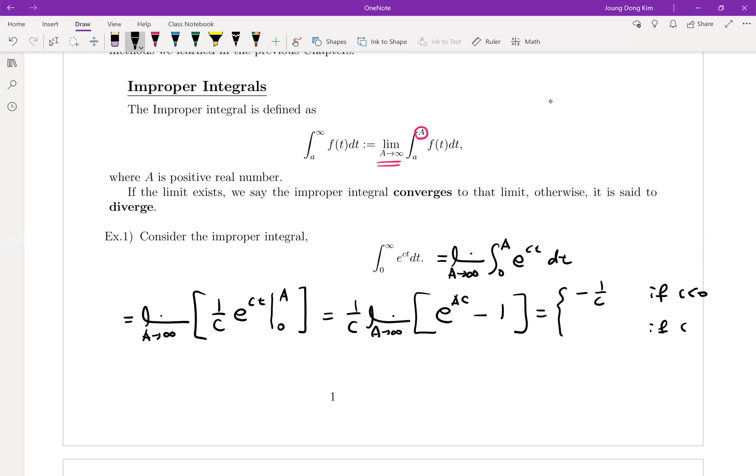But if your c is bigger than zero, then in other words your exponent is plus infinite. E to the infinite is infinite. Infinite minus one is also infinite. So this is divergent.